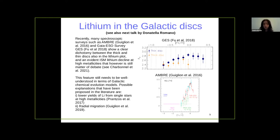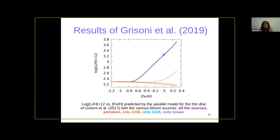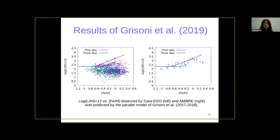We propose a novel explanation for this lithium decline. Here I show the results for the model of the thin disk considering various lithium sources: all sources combined, AGB stars only, galactic cosmic rays only, and novae only. Most of lithium is produced by novae, which are the main lithium producers in the galaxy. By applying this prescription to both the thick and thin disk models, we get a dichotomy in the lithium plot. I compare the model predictions with Gaia-ESO data on the left and AMBRE data on the right. The thin disk is lithium-enhanced with respect to the thick disk, which evolved faster.